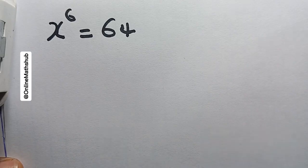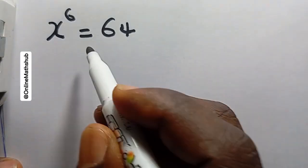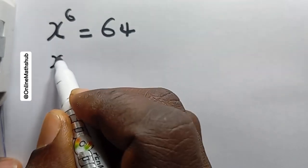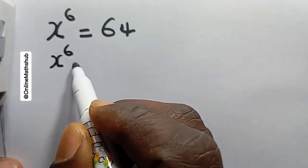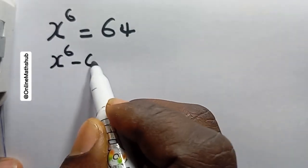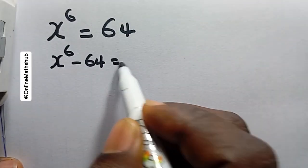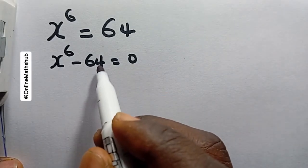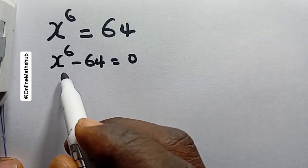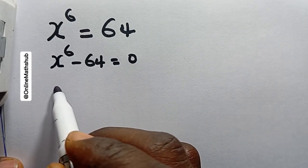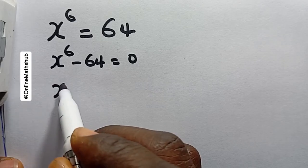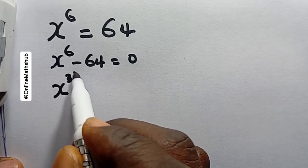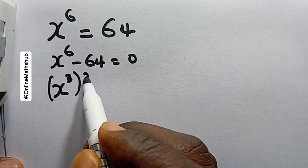The first thing I want to do is subtract 64 from both sides. If I do that, I'm going to have x to the power of 6 minus 64 is equal to 0. I can go ahead to write x to the power of 6 as x to the power of 3, raised to the power of 2.